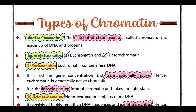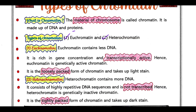So what is euchromatin? Euchromatin contains less DNA in the chromosome. It is rich in gene concentration and it is transcriptionally active. That means the euchromatin region contains many structural genes, and structural genes are ready to be transcribed.